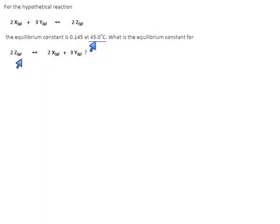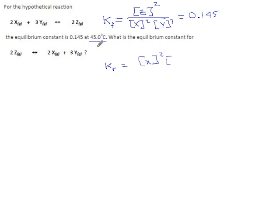What is the equilibrium constant for this reverse reaction? For the forward reaction, K would be z squared over x squared times y to the third, which equals 0.145. For the reverse reaction, K would be x squared times y to the third over z squared. You can see that this K and the forward K are reciprocals of each other. That means this number and the first number must be reciprocals of each other.